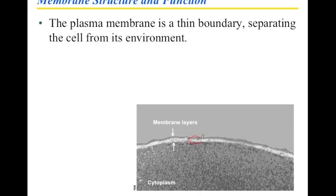This membrane has three layers, really — a layer on the top, a layer on the bottom, and then something in the middle. It's a pretty interesting kind of boundary because it's not just like a plastic film. It's not just one layer; it's actually a little bit more complex. The question is, what exactly is in it?